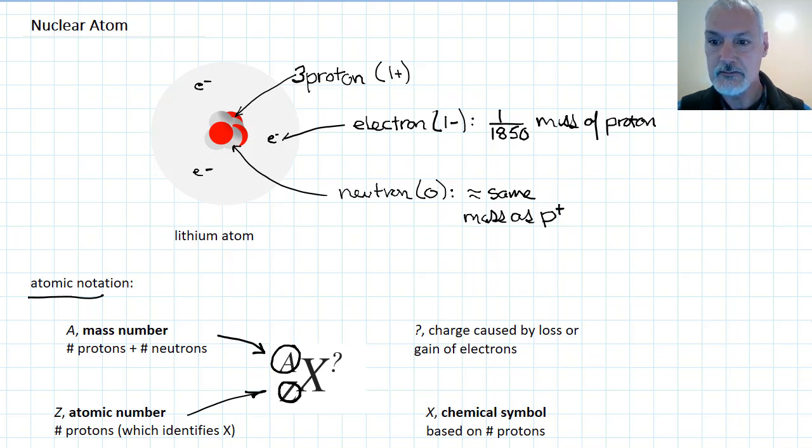So for instance, up here, there were three protons. And as a result, because this atom was neutral, I had three electrons. Typically here, for atomic notation, we would put the charge. In this case, there is no charge, so we've left it blank. If it's blank, it's understood to be zero. But by adding or moving electrons, I can create a charge on my species.